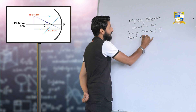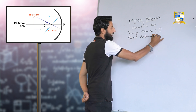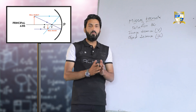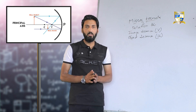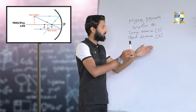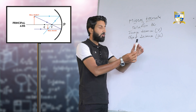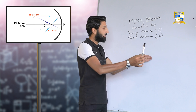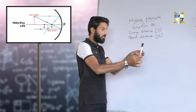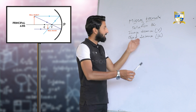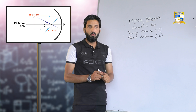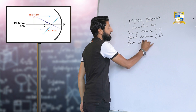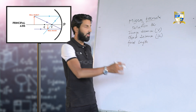Object distance is denoted by u. It is the distance at which the object is placed from the mirror. For example, if the object is placed 30 centimeters from the mirror, that distance is known as object distance. The third quantity is focal length — the distance between the pole and the focus — denoted by small f.